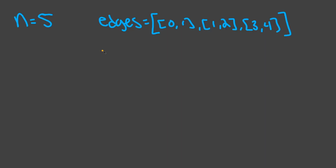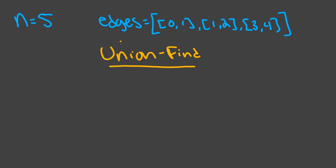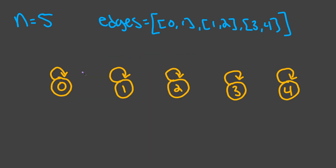While this solution is efficient and does work, there is another solution that involves a data structure specifically made for this problem. The data structure we're going to use is called Union Find, and it allows us to keep track of the number of components in an undirected graph. Depending on how you implement it, it can be used to detect a cycle in an undirected graph and to solve some tree problems as well. The first thing we're going to do is initialize all the nodes to be pointing to themselves, because we want zero to be a parent of itself, one to be a parent of itself, and so on.